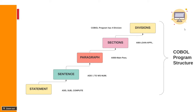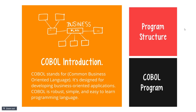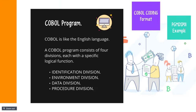Now let's move on to the next section that explains the different divisions of a COBOL program. COBOL is an English-like language and a COBOL program is divided into four different divisions, each with a specific meaning. The first one is identification division, then environment division, then data division, and the last one is procedure division, which contains your entire program logic.